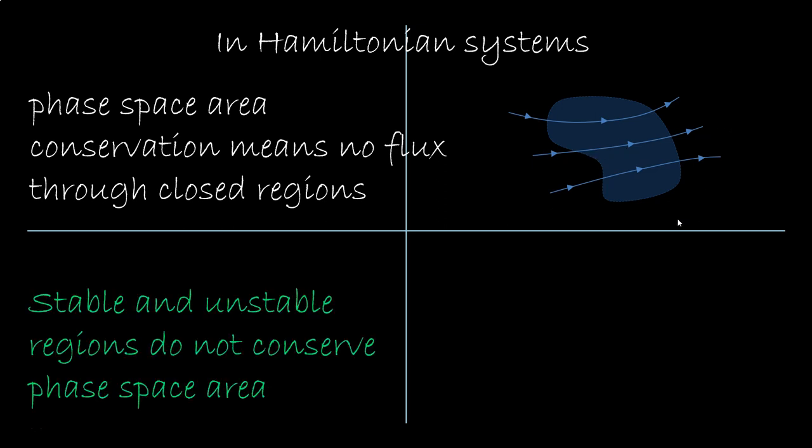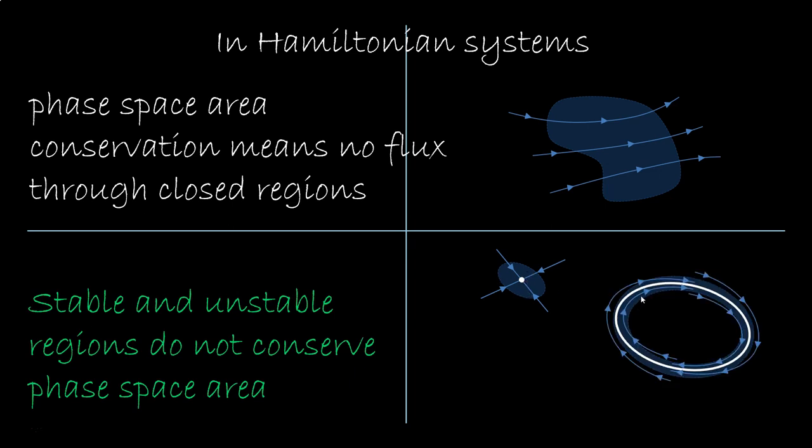Now look, stable and unstable regions do not conserve the area around them. Take a stable equilibrium, all points move closer to the equilibrium. The area around shrinks. Same with a cycle. Take an area around the stable cycle, it will shrink. An unstable equilibrium will stretch the area instead. So all these situations are ruled out in Hamiltonian mechanics.